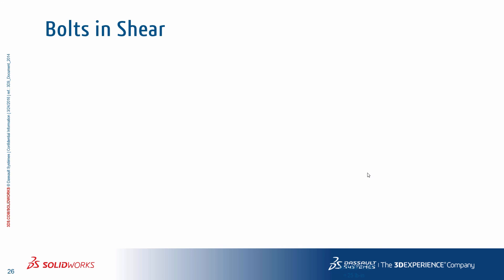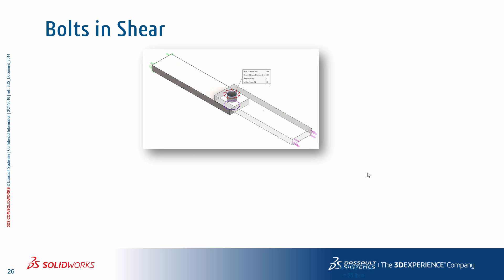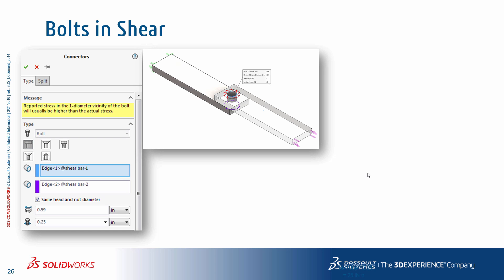Let's look at how SOLIDWORKS Simulation connector results compare to what we might expect from calculations on simple systems, so we can have confidence while dealing with more complex systems. Let's start with a simple two-plate model. The first step is to create a bolted connection between the two plates and put that bolt in a shear scenario by applying a 100-pound load.